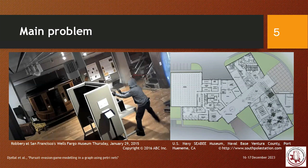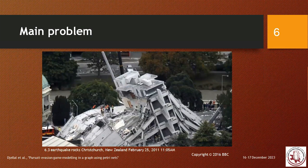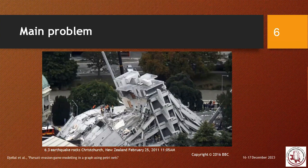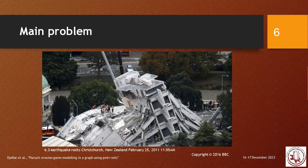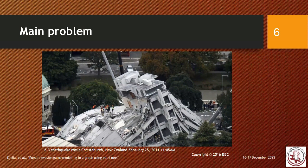Another application of the pursuit evasion problem is locating an intruder or finding survivors. For example, in the case of a catastrophe like the 2011 earthquake in New Zealand measuring 6.3 degrees, buildings are destroyed and there may be survivors inside. We need to find them with minimum effort — because it is very dangerous — and especially with minimum time, because survivors may die from suffocation or the building may collapse further. These are the scenarios that motivate the pursuit evasion problem.